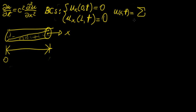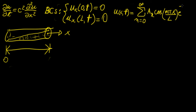The solution we came up with for this case was: the sum from n equals 0 to infinity of a_n cosine(nπx over l), with the exponential function e to the power of −c²n²π² over l² times t.